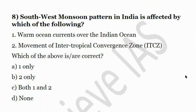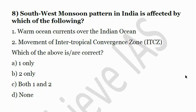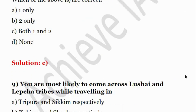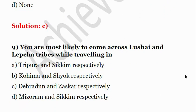Eighth question: The Southwest Monsoon pattern in India is affected by which of the following — first, warm ocean currents over the Indian Ocean; second, movement of the Intertropical Convergence Zone. Both these events make a visible impact on the Southwest Monsoon. The answer is C — both one and two. Detailed explanation is available in the subscriber PDFs.